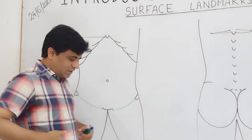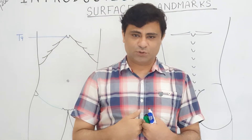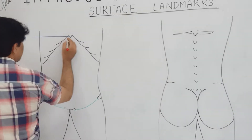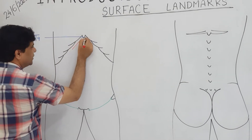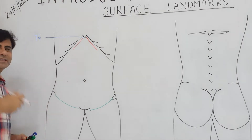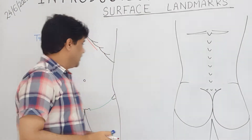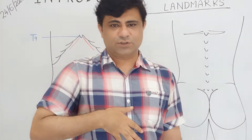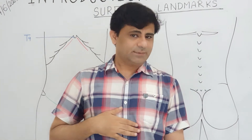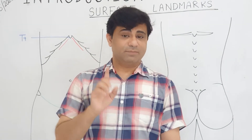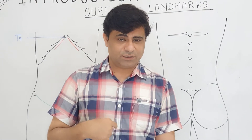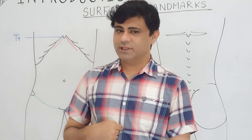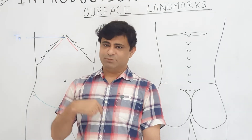The costal margin forms an angle when it reaches the Luschka sternal joint, and this angle is called the infrasternal angle. The area of the abdominal wall below this is called the epigastric fossa. What lies deep to this - remember, immediately behind this lies not the stomach but the left lobe of the liver, and deep to that will be the stomach.